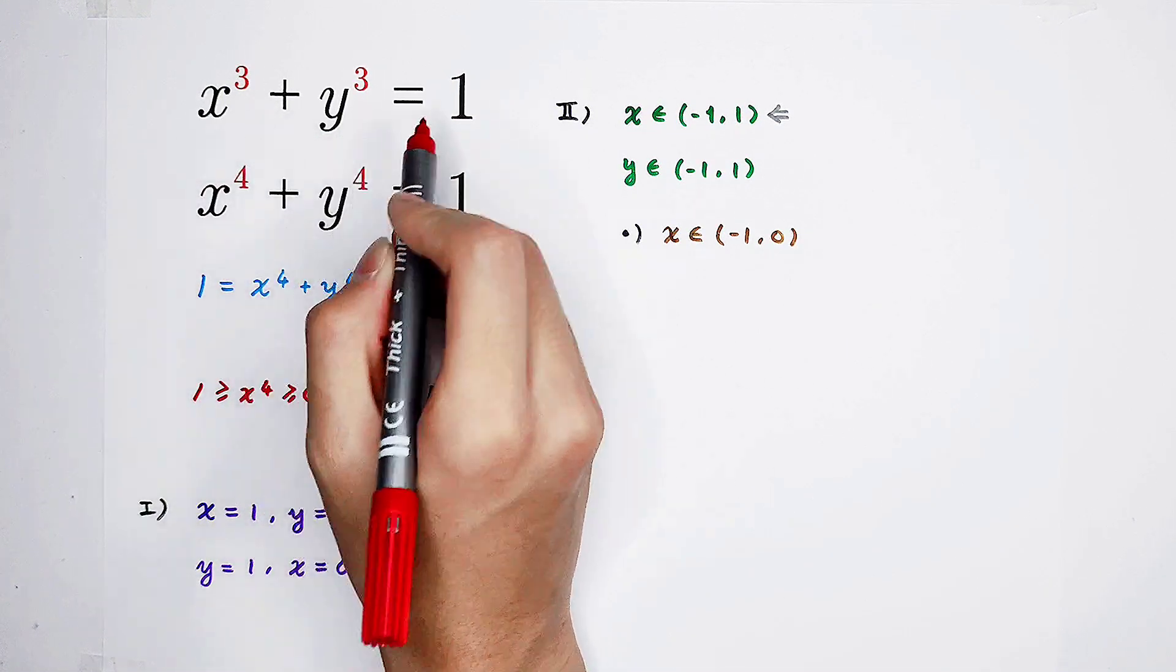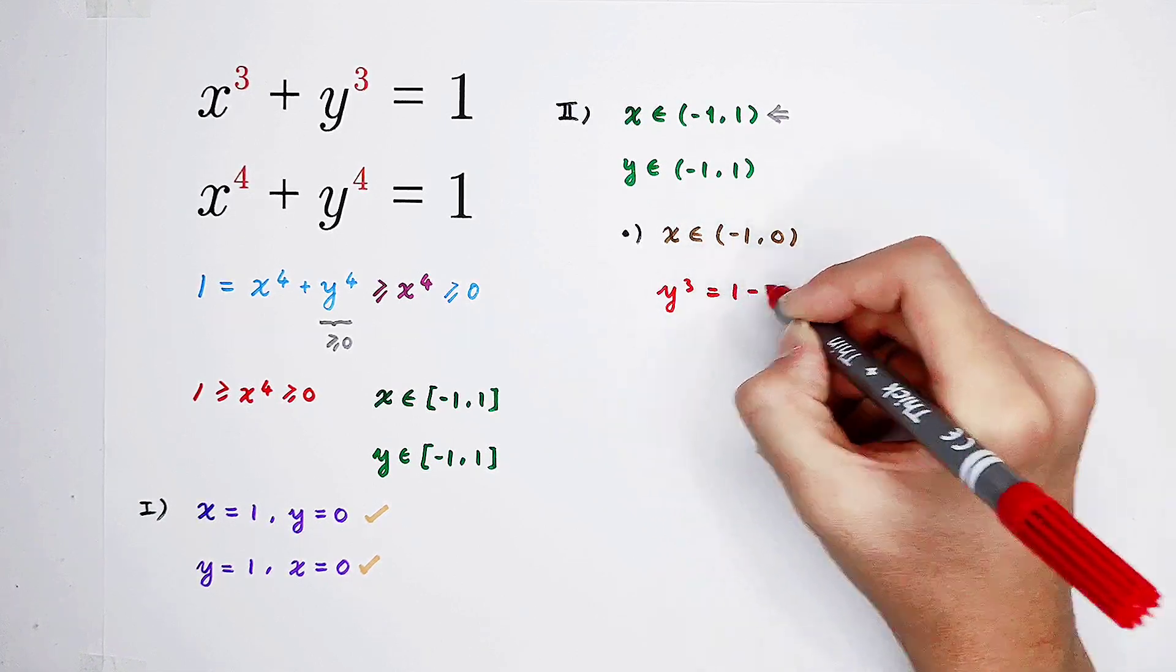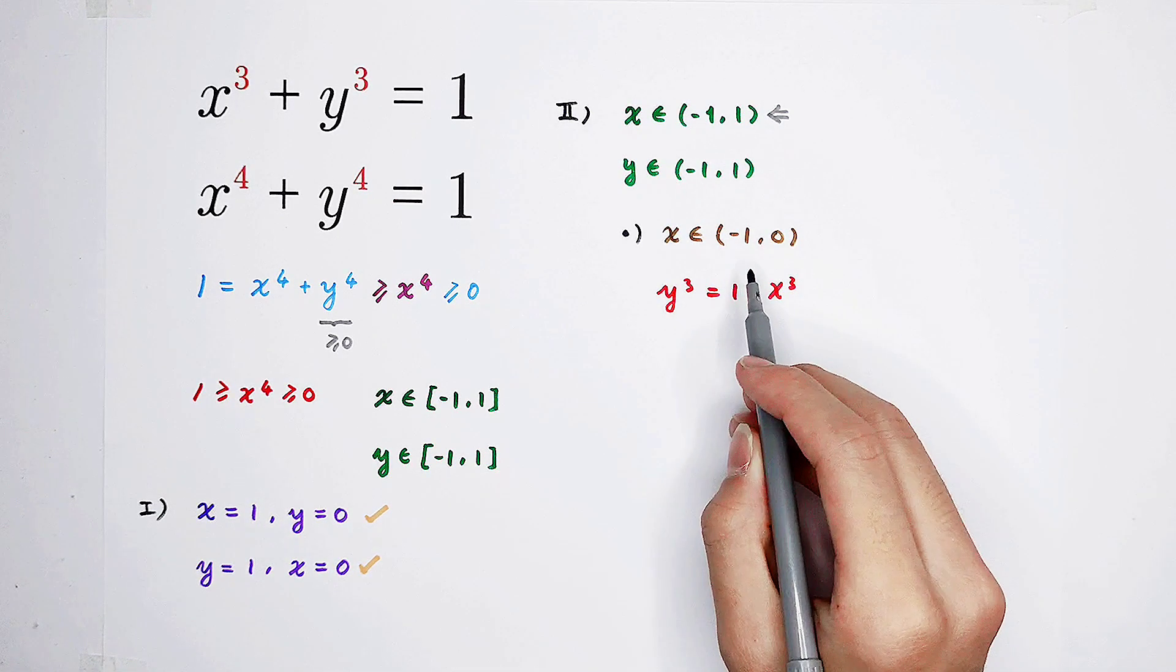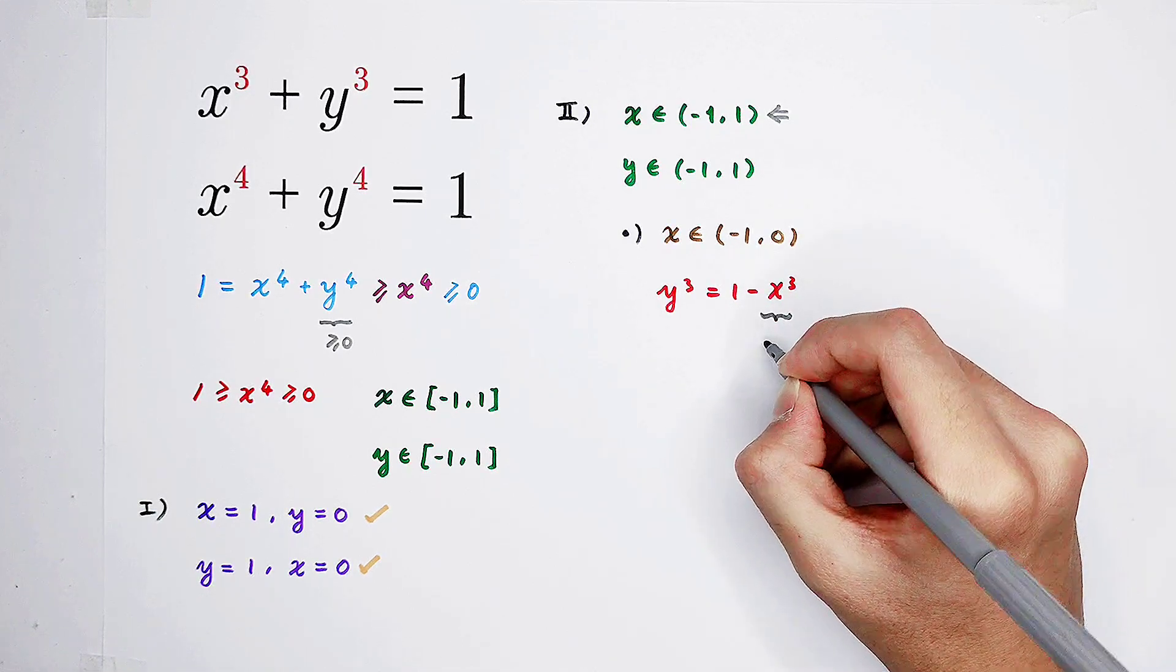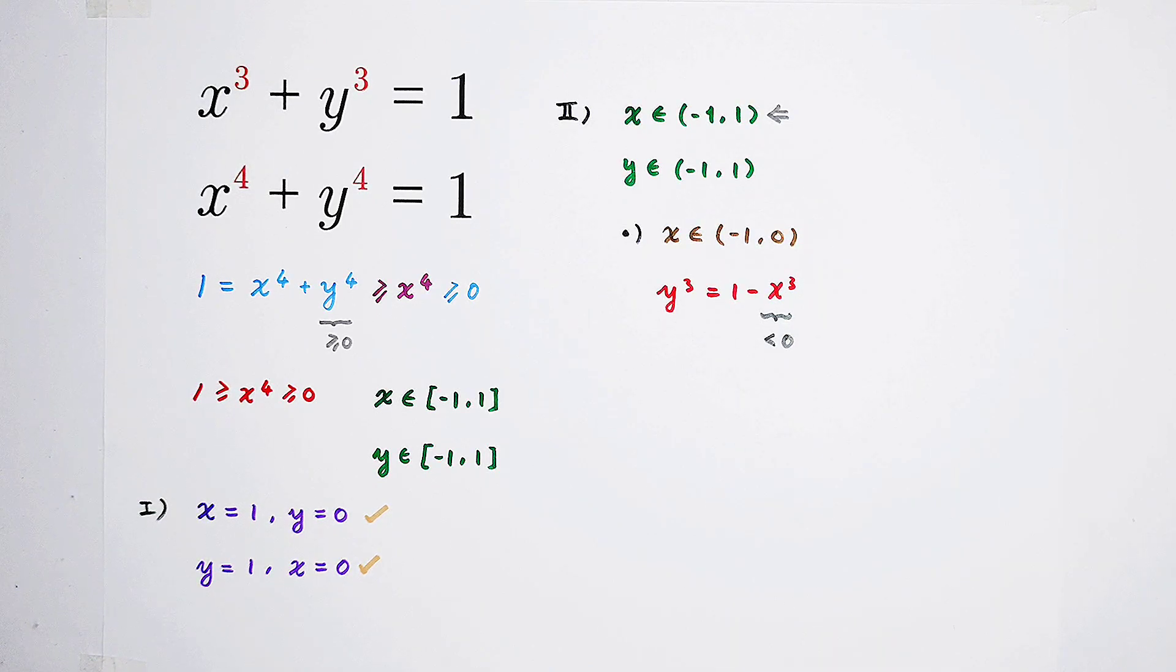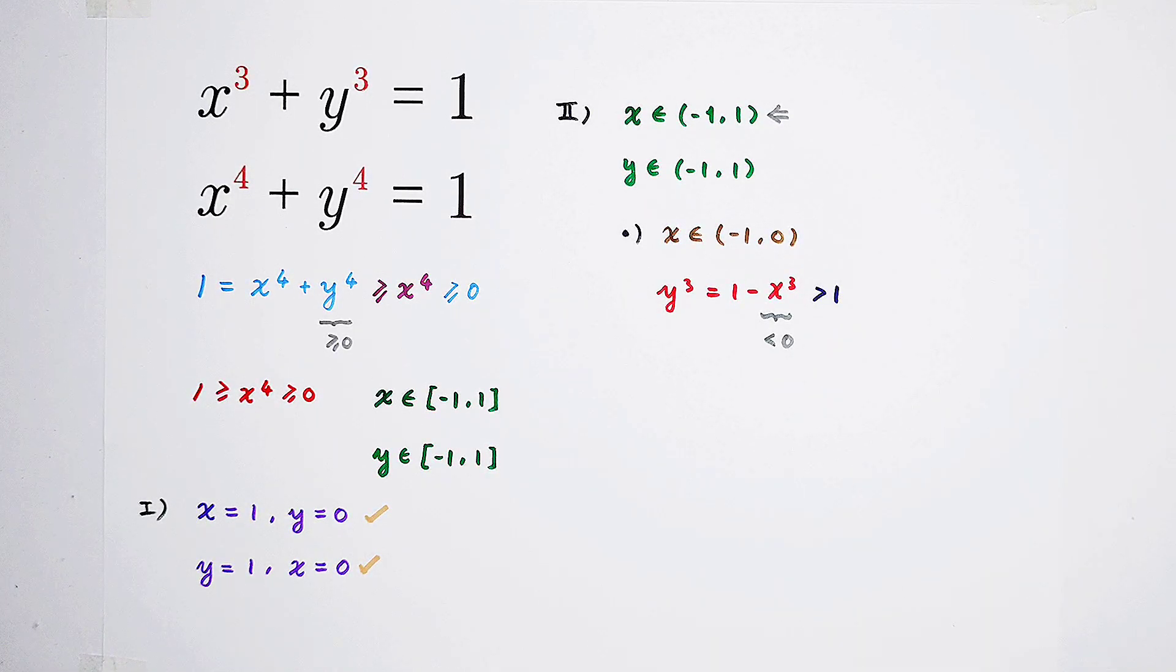Now, because x cubed plus y cubed equals 1, so y cubed is 1 minus x cubed. Because we know x is bigger than negative 1, smaller than 0, so x cubed is smaller than 0, it is negative. So that means 1 minus a negative number. 1 minus a negative number, the result must be greater than 1. Understand? Yes, it's quite easy. What have we got? y cubed is bigger than 1.